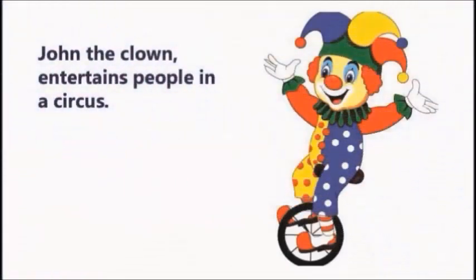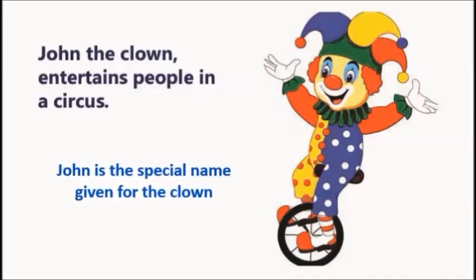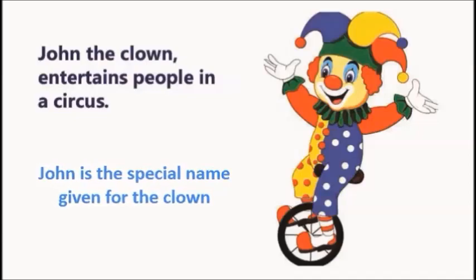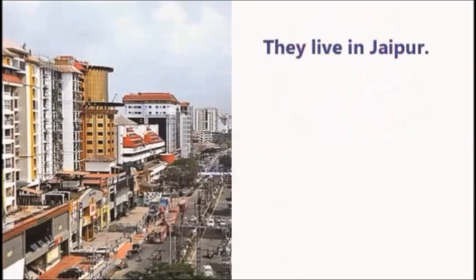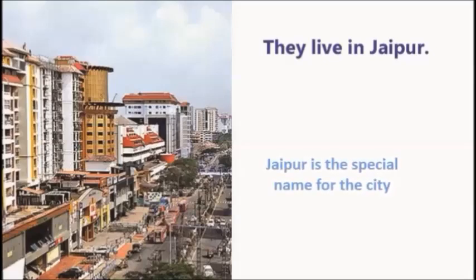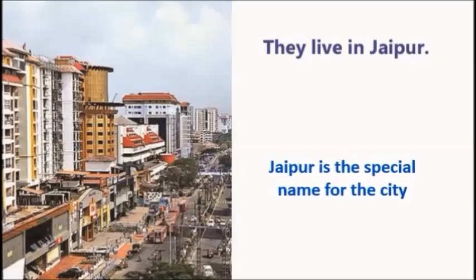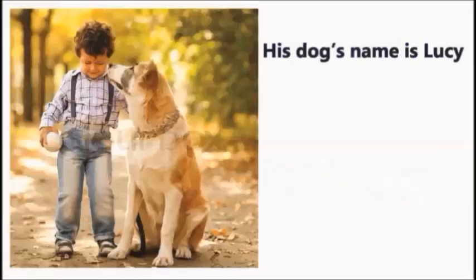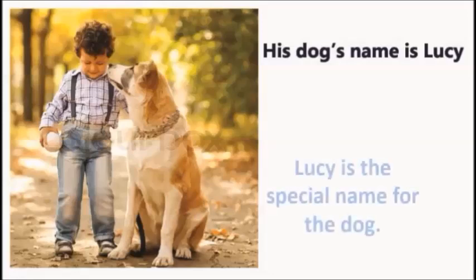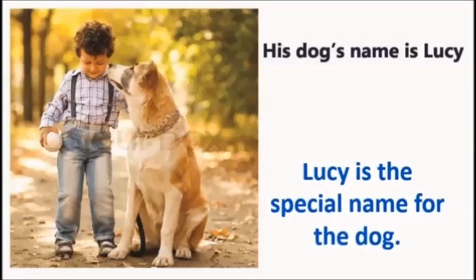For example, 'John the clown entertains people in a circus.' Here in this sentence, we are talking about John the clown. John is the special name given for the clown. Second, 'They live in Jaipur.' Here in this sentence, we are talking about Jaipur, a city. Jaipur is the special name for the city. Third, 'His dog's name is Lucy.' In this sentence, we are talking about Lucy the dog. Lucy is the special name for the dog.